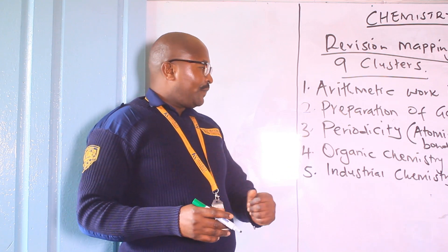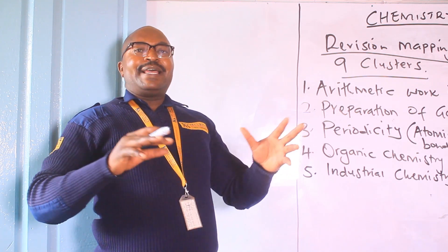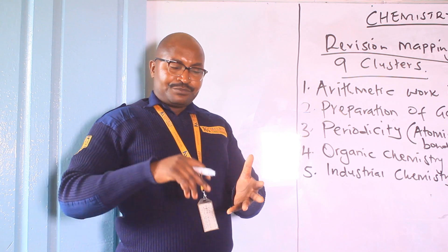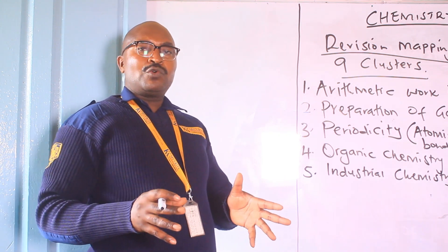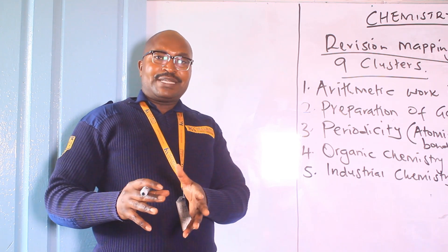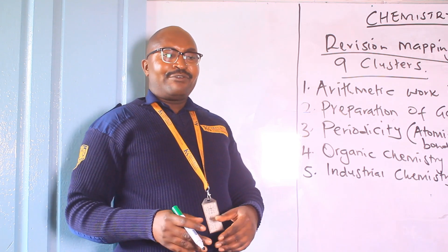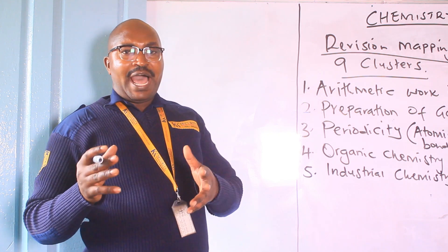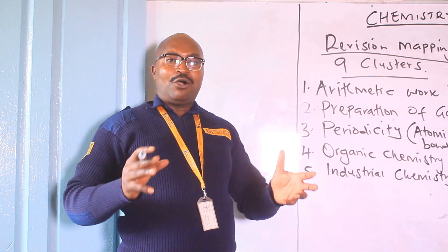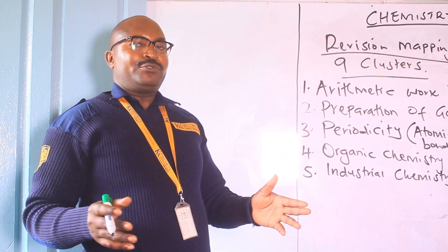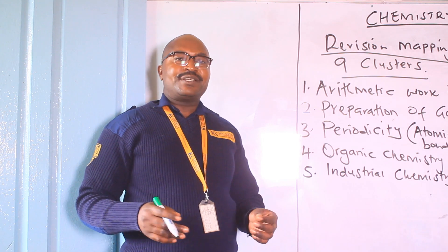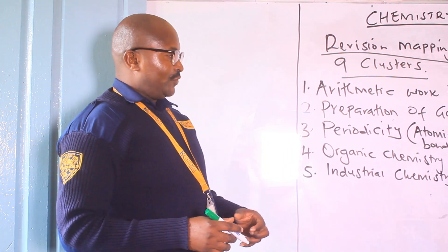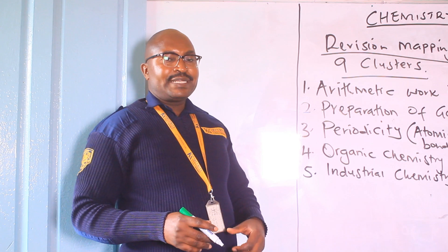In Form 4, the industrial process we are going to look at is extraction of metals. Here we are going to look at the extraction of sodium and also extraction of aluminium — these two are extracted through electrolysis. Then we also look at extraction of zinc, extraction of lead, and extraction of iron, which are extracted from their ores through reduction by carbon and carbon monoxide. And lastly, extraction of copper through froth flotation. Those are the eight industrial processes.